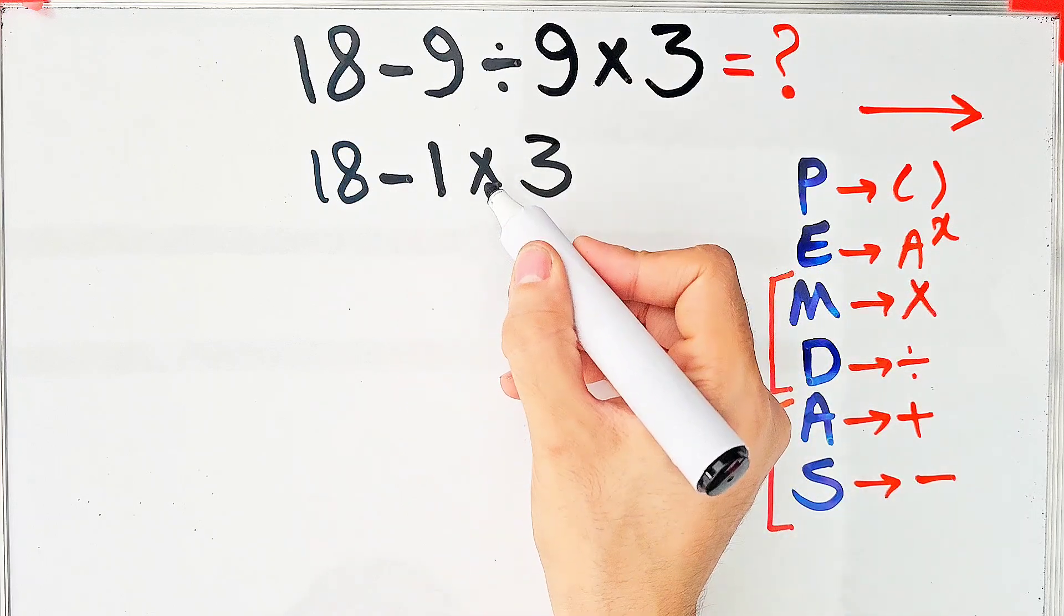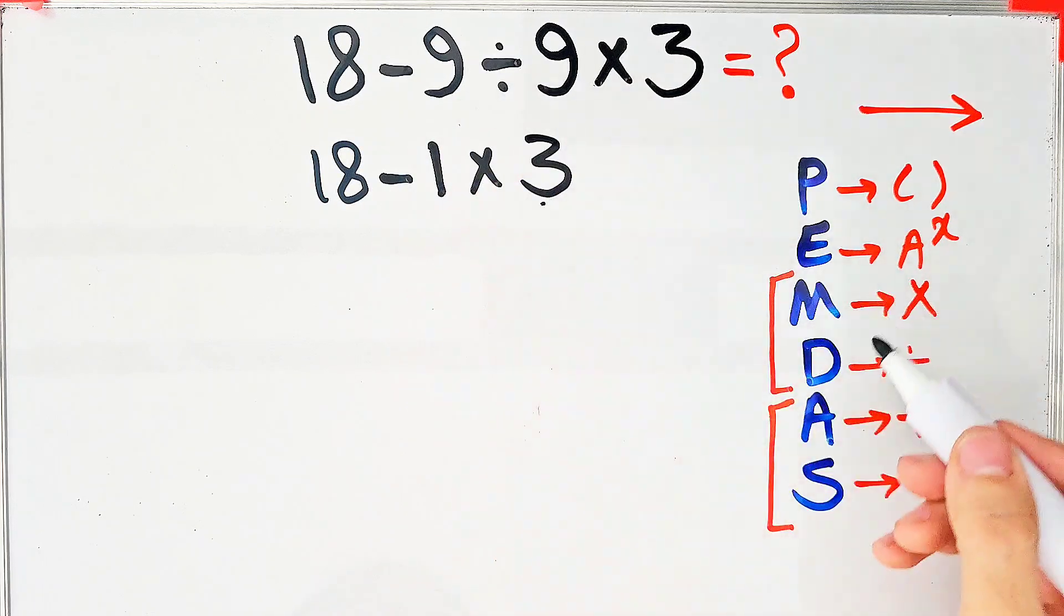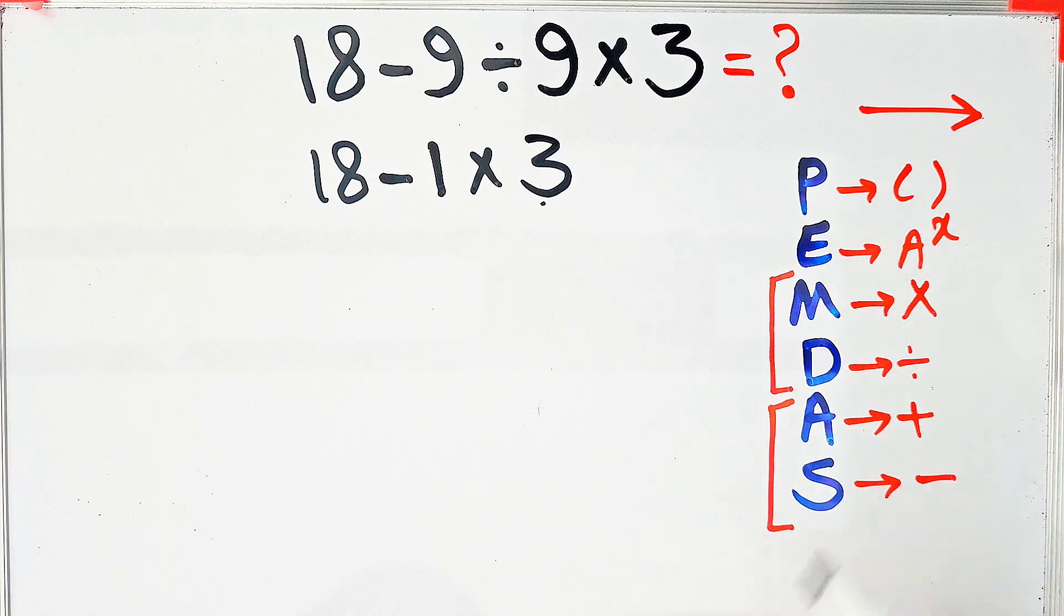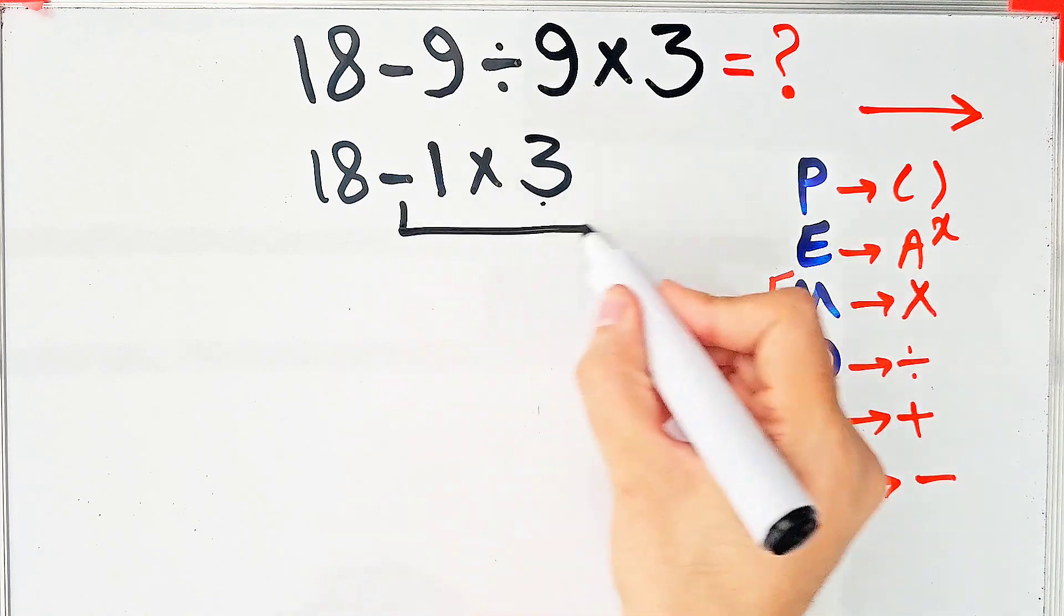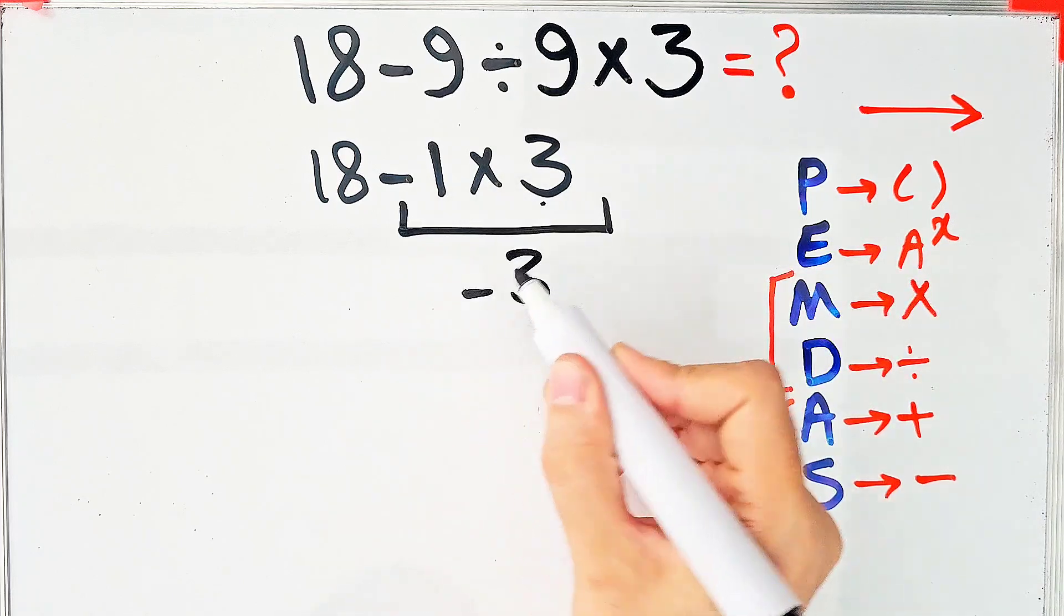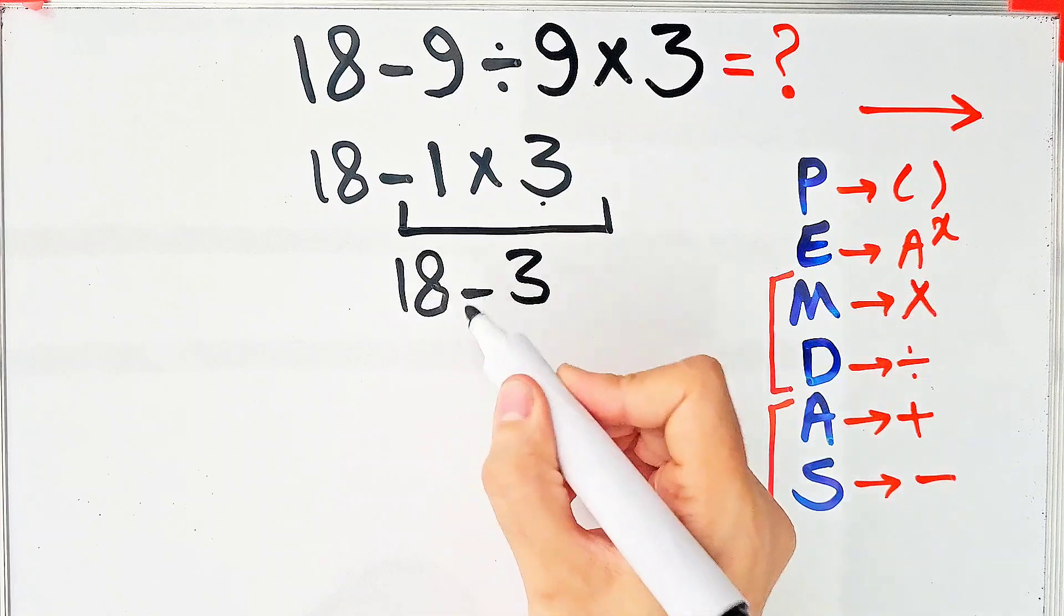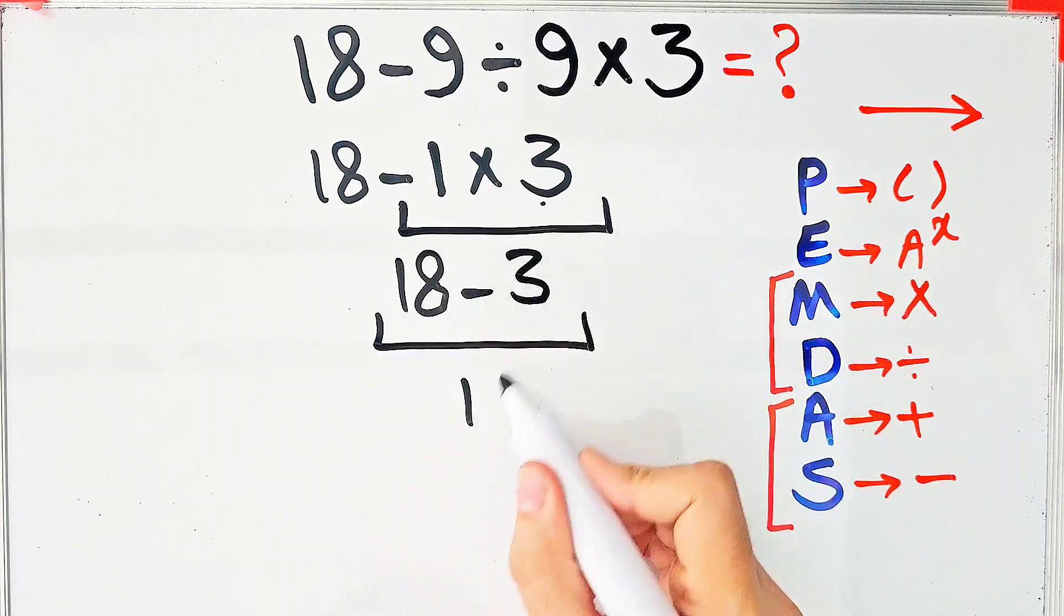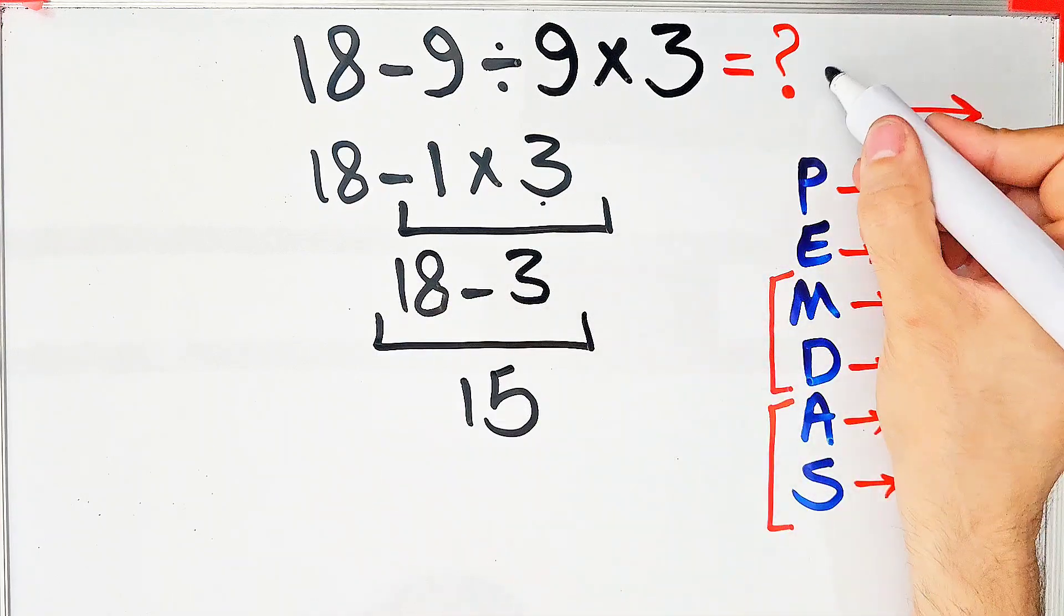In this step, we have subtraction and multiplication. First, we do this multiplication because multiplication has higher priority than subtraction. Negative 1 times 3 equals negative 3 and 18 minus 3 equals 15. The final answer of this question equals 15.